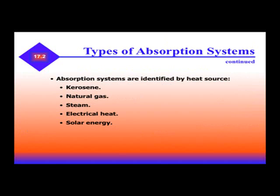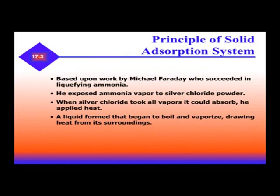Kerosene and steam are commonly used. Kerosene is often used for recreational vehicles. Natural gas is used for residential, commercial, and industrial applications. Steam is used for industrial and commercial. Electric heat is often used for recreational vehicles or small ice chests. Solar energy is also used and is becoming more and more frequent.